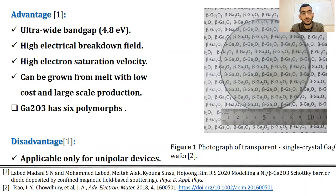It has an ultra-wide bandgap of about 4.8 eV, high electrical breakdown field, and high saturation velocity. Furthermore, it can be grown directly from melt with low-cost and large-scale production. In addition, gallium oxide has six polymorphs with beta-polymorph the most thermodynamically stable.